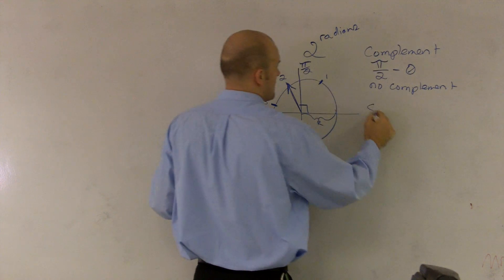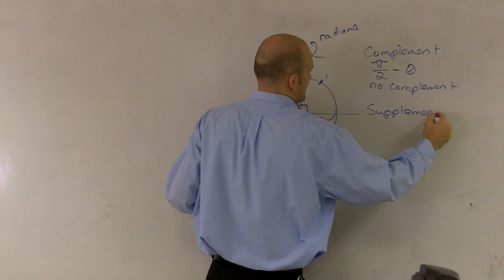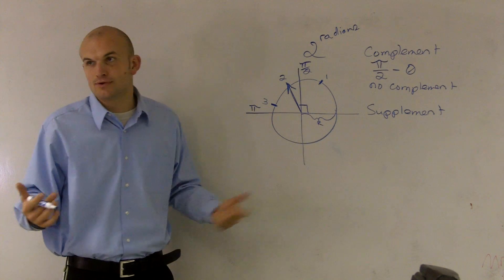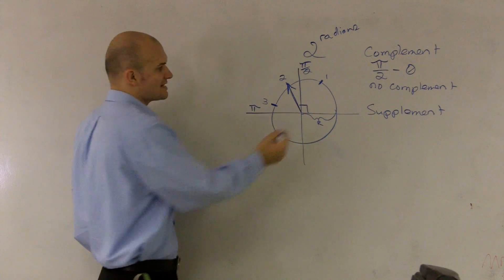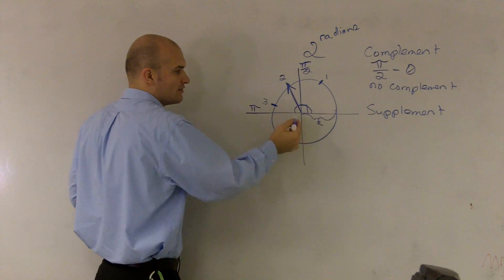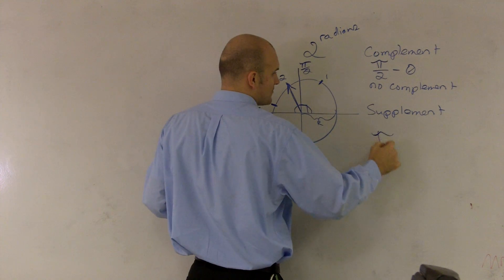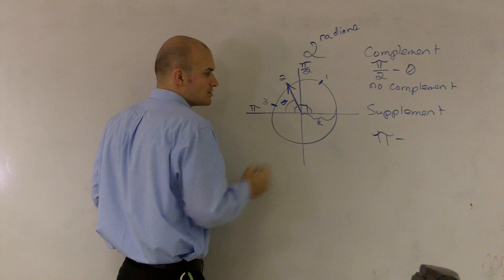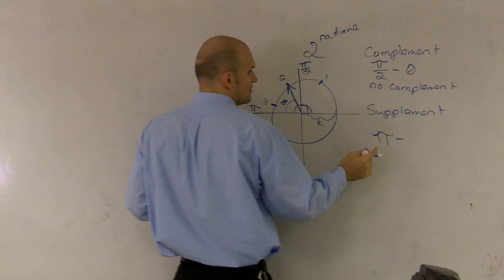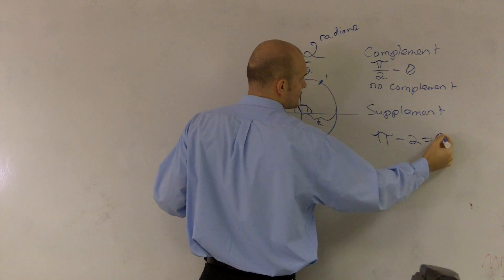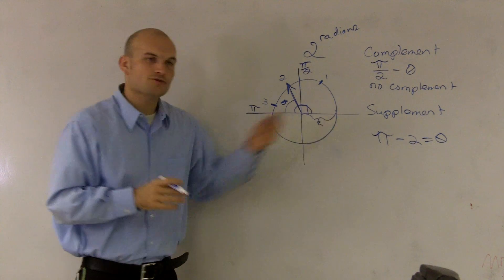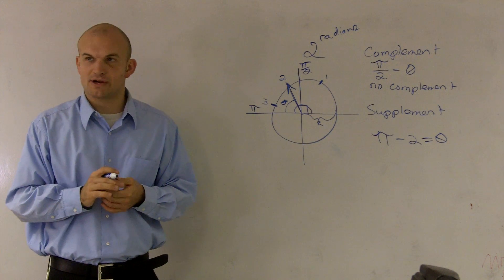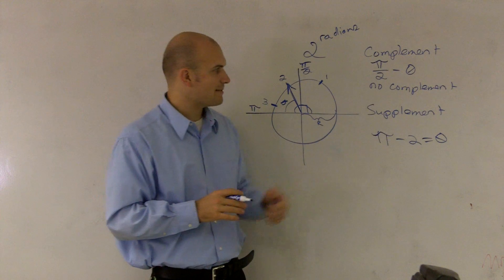Then let's take a look at the supplement. Remember, the supplement is what two angles add up to give you 180 degrees. But now we're not dealing with degrees, we're dealing with radians. Well, what is the exact term for 180 degrees? It's pi. So all you do is pi minus what we have — we have two radians. So pi minus 2 equals my theta, so this is pi minus 2. You'll have to approximate your answer in decimal form, but it's just pi minus 2 equals theta.